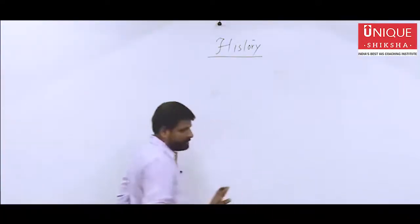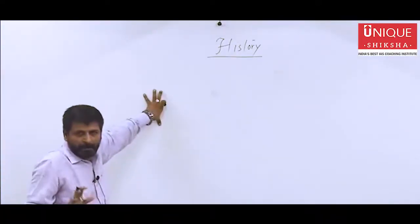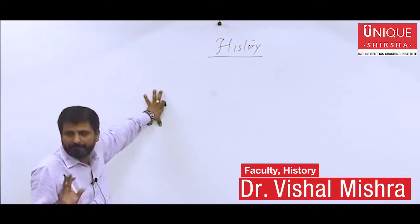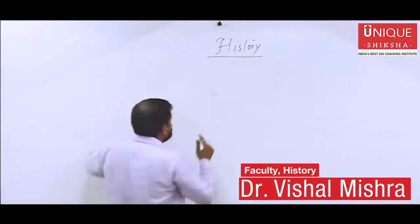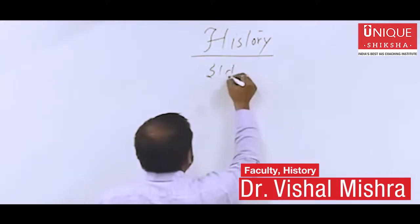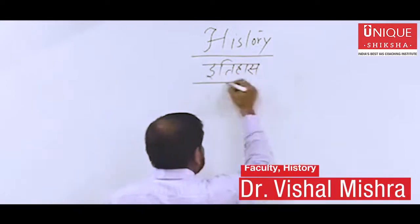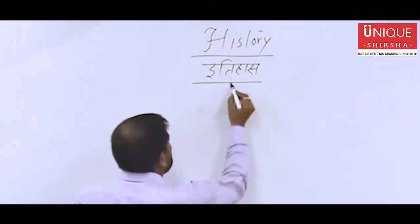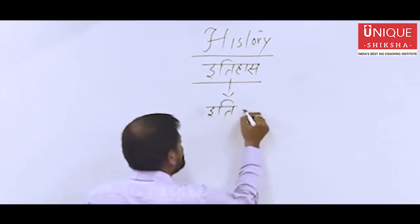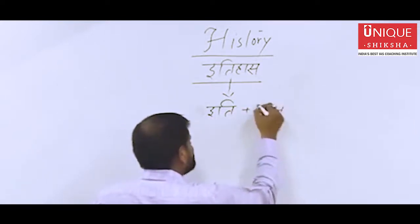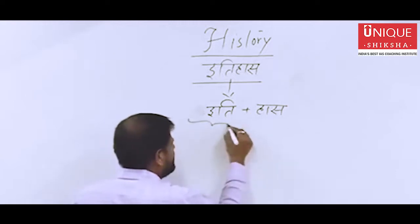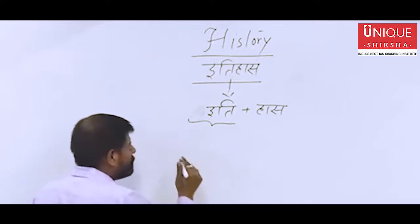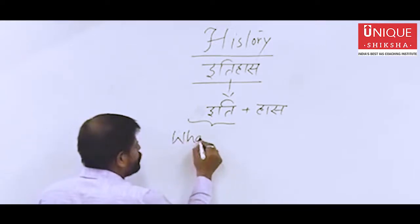Now we are going to start history. Before this, focus on your history subject, don't take it lightly — it is very easy to learn. This history is called Itihas, and Itihas is made up of two words: 'Iti' plus 'has'. It is a Sanskrit word.